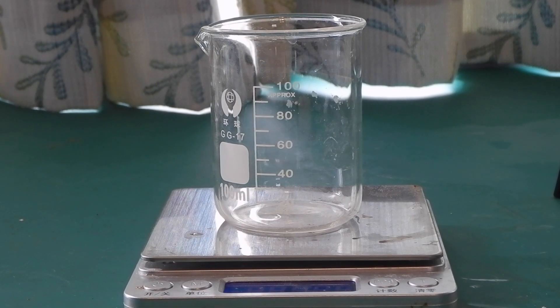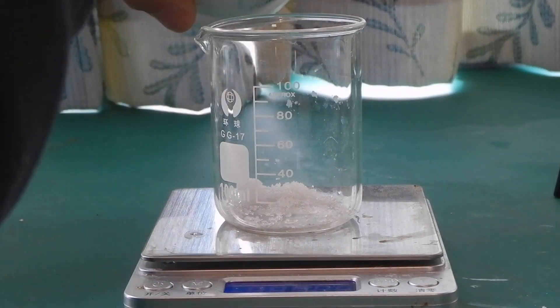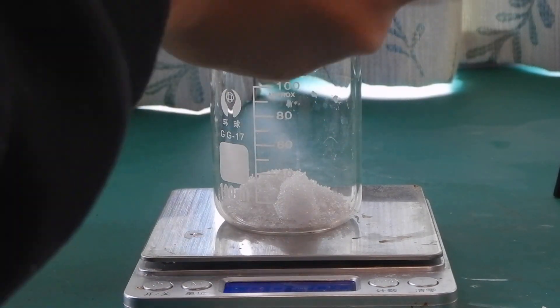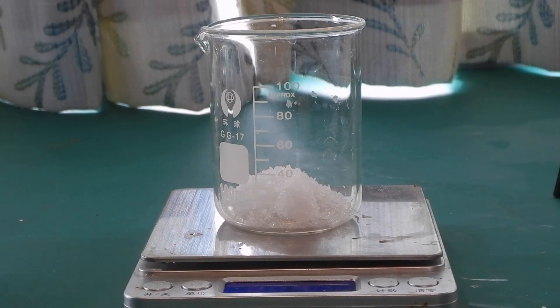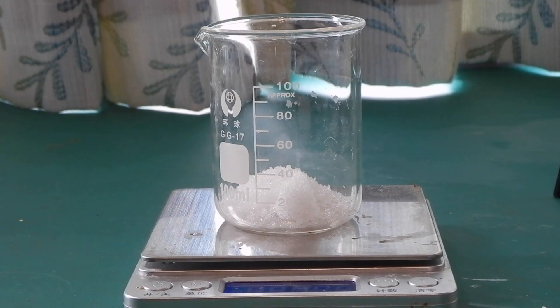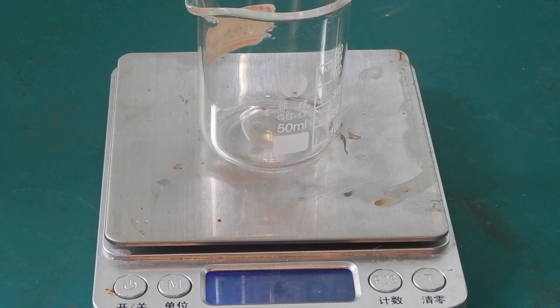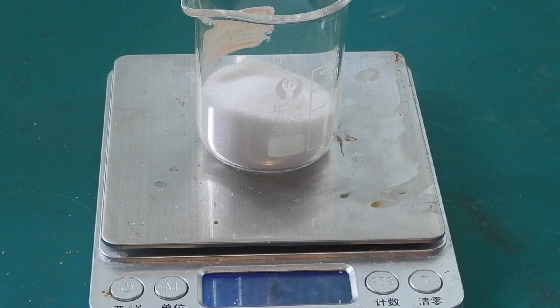Measure out 69.04 grams of sodium bisulfate monohydrate in a beaker and add 63 milliliters of water to dissolve it. Then, measure out 29.22 grams of sodium chloride in another beaker. Dump the sodium chloride into the conical flask.